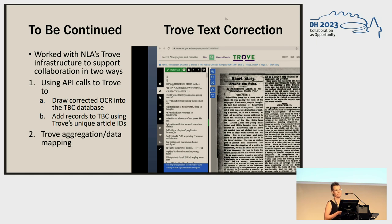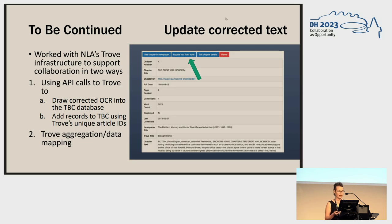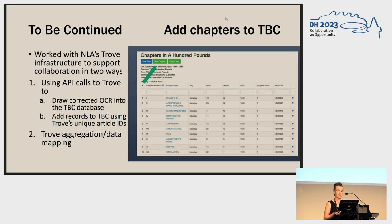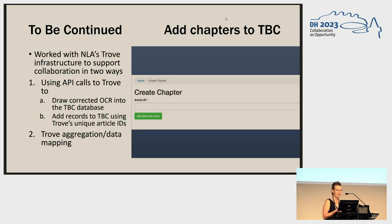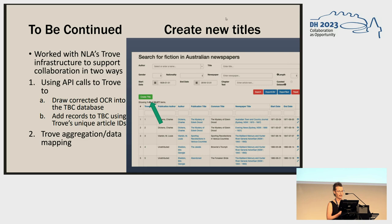There's some pretty bad OCR in there. They would use a button to update the text and draw the corrected text back into the database. The second main task they could do with these API calls was add new records to TBC — either add missing chapters of existing titles by inputting the unique article ID that comes after the Trove digital article, or add entirely new stories using the 'create title' function.